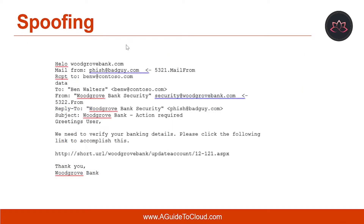Spoofing is a technique used to forge an email header so that the message appears to recipients as having been sent from a trusted source. By design, the Simple Mail Transfer Protocol or SMTP allows for a domain to send on behalf of another domain because there is a legitimate reason for doing so — for example, when you have hired an external company to send advertising on your behalf. But spoofing is also used by attackers to trick the recipient into divulging information such as account credentials, credit card information, or other sensitive information.